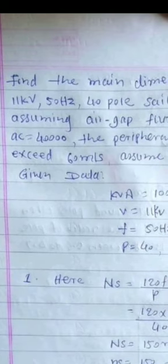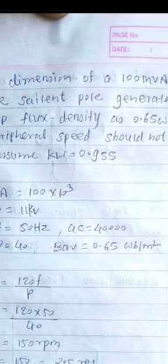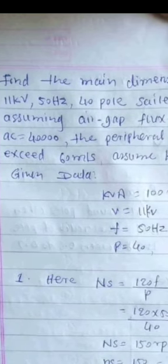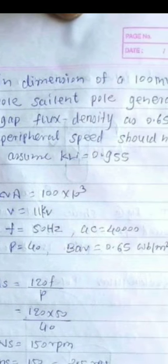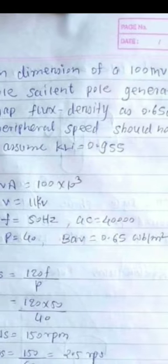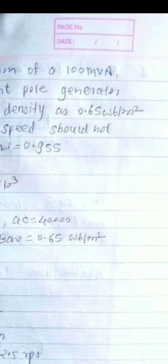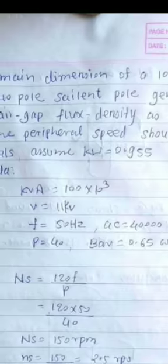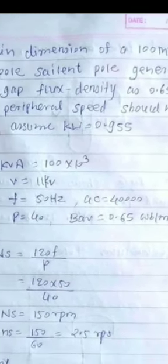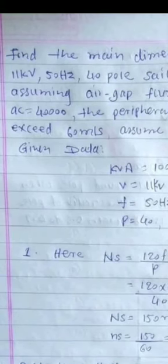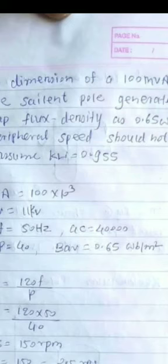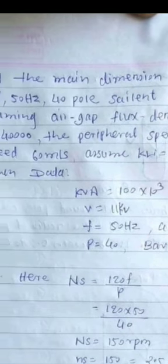We are going to read the problem. Find the main dimensions of a 100 MVA, 11 kV, 50 Hz, 40 pole, salient pole generator. Assuming air gap flux density is 0.65 Weber per meter square,